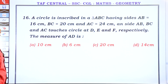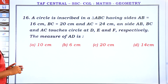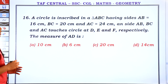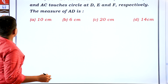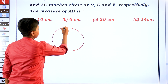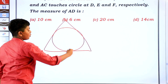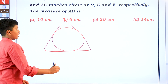A circle is inscribed in triangle ABC having side AB equal to 16 cm, BC equal to 20 cm, and AC equal to 24 cm. The circle touches sides AB, BC, and AC at points D, E, and F respectively. We need to find the measure of AD.